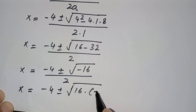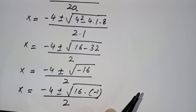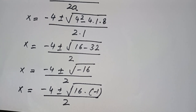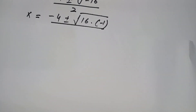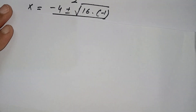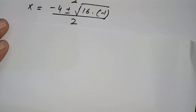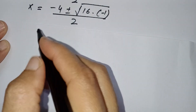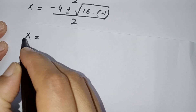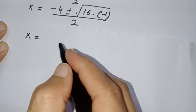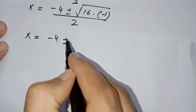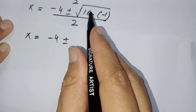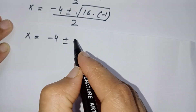We can write √(−16) as √(16 × −1), which equals 4i. So x = (−4 ± 4i) / 2.